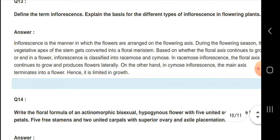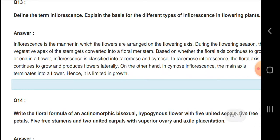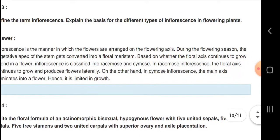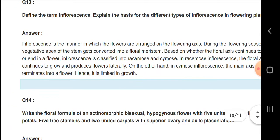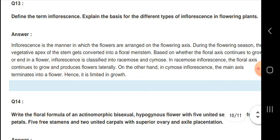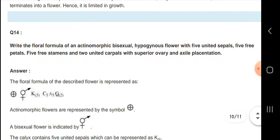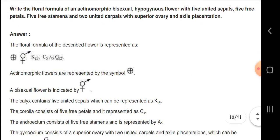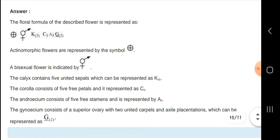Inflorescence is the manner in which flowers are arranged on the flowering axis. During the flowering season, the vegetative apex of the stem gets converted into a floral meristem. This is the bisexual flower indicated.